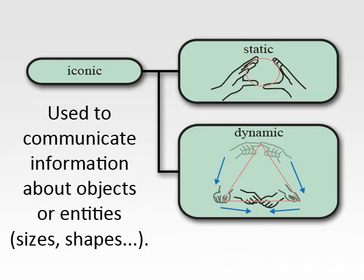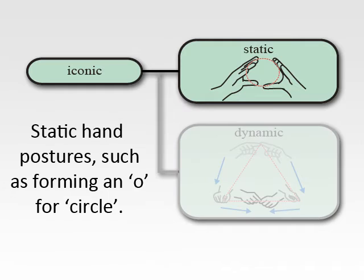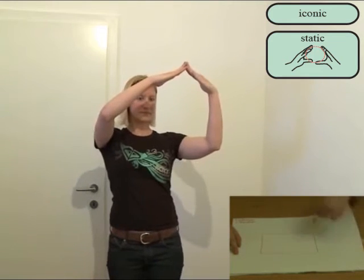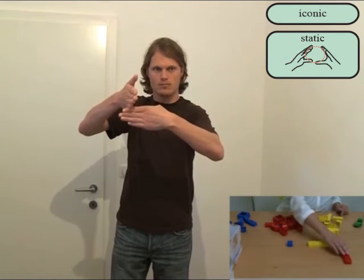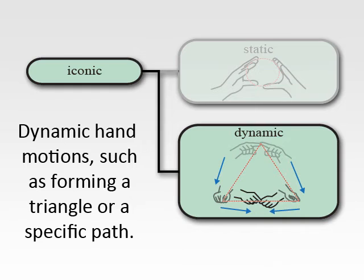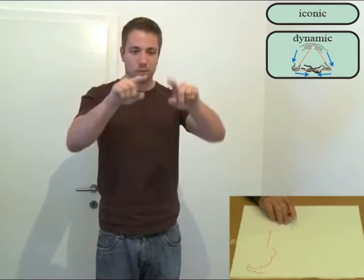Iconic gestures are used to communicate information about objects or entities, such as size or shapes. In iconic static gestures, this is done by static hand postures, like in showing the shapes, the sizes, or spatial relationships of objects. Iconic dynamic gestures use hand movements, for example, by drawing shapes and paths into mid-air.